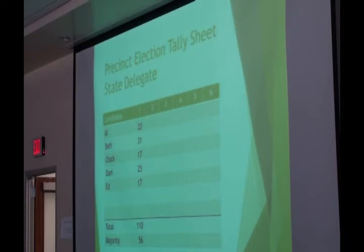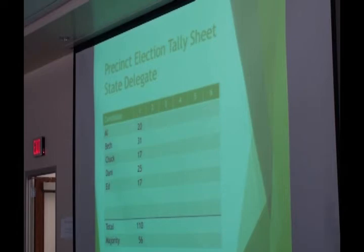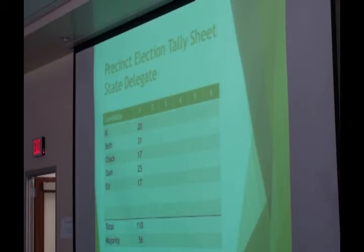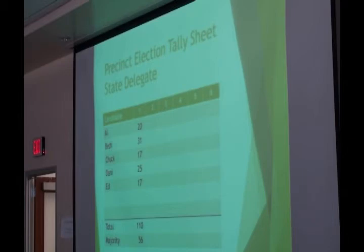In a preferential ballot, just like Eric said, it was the first preference on the ballot that was counted for that person. On that preferential ballot, you express your first choice, second choice, third choice, and the counters looked at the first choice for Al and put those ballots in a stack for Al, looked at whose first choice was Beth and put those in a stack for Beth, and so forth, coming up with 110 votes cast. 56 is the majority, so now we need to go to the second round.